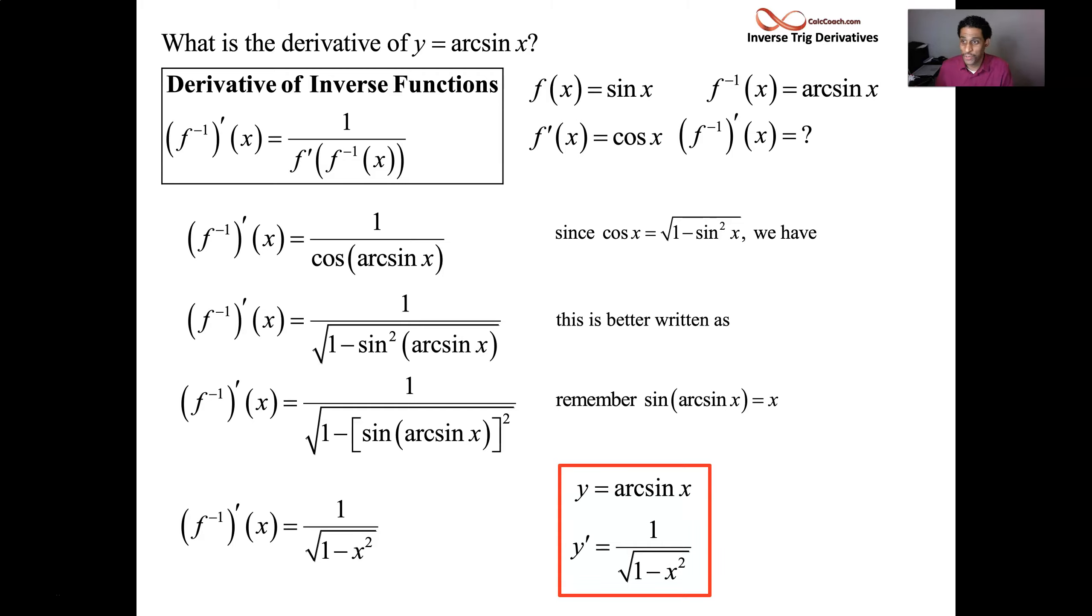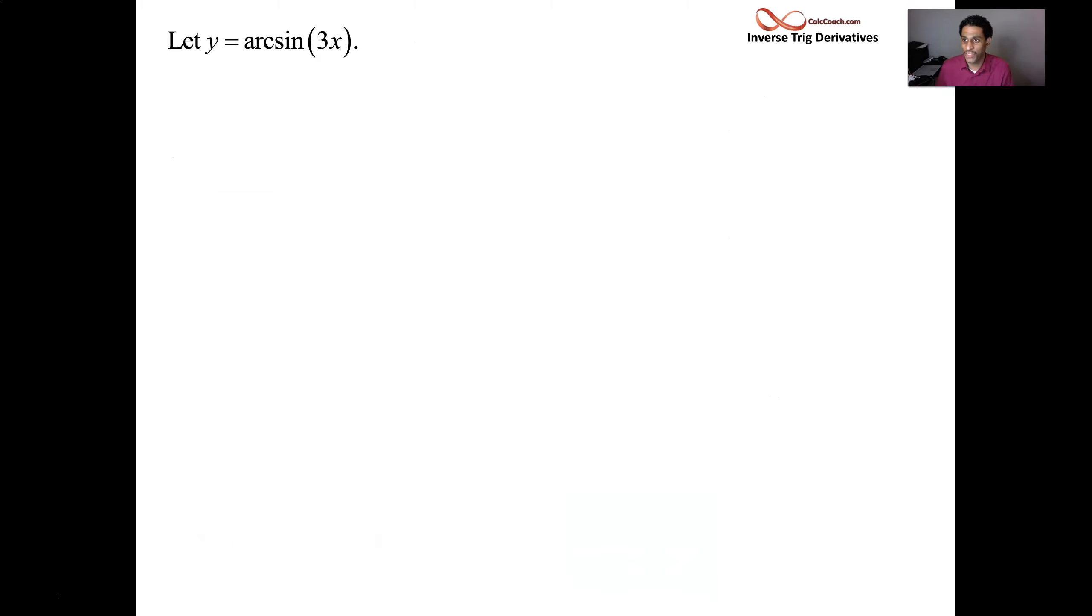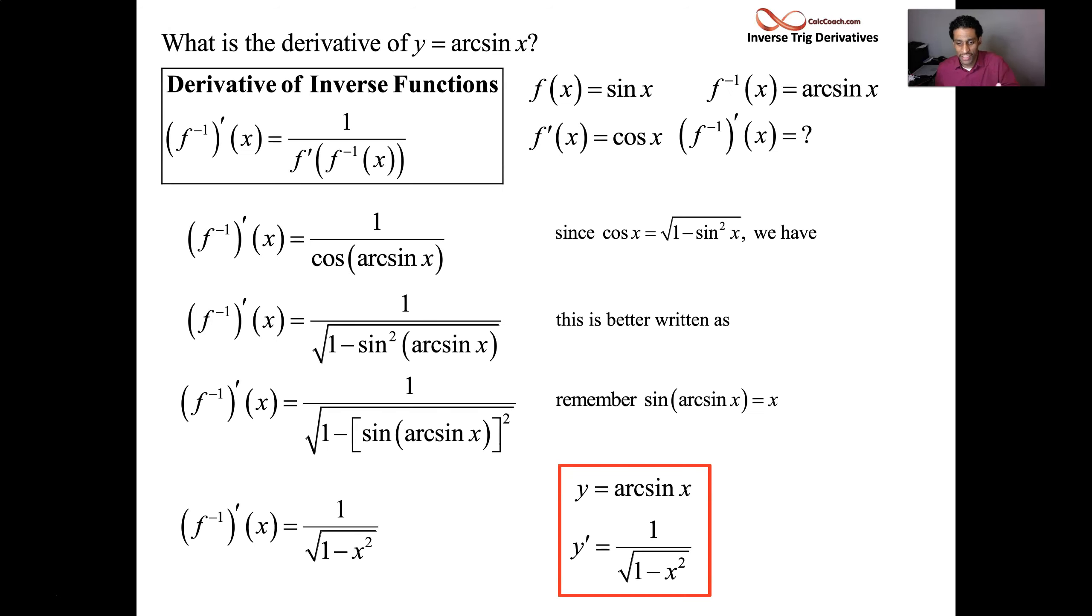Let's do an example question with that. How about the arc sine of 3x? Whenever you have a derivative statement, when you learn a function, then there's the chain rule version of it. What if there's more than just an x on the inside? So that's what we're going to do here: the arc sine of 3x. We're going to evaluate this derivative at √3/6.